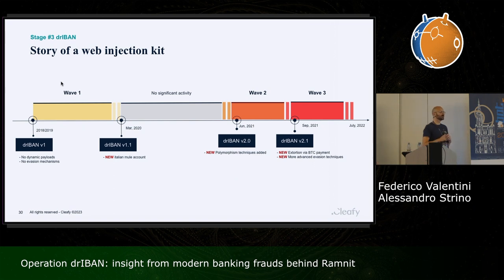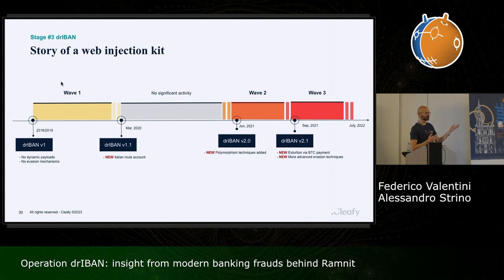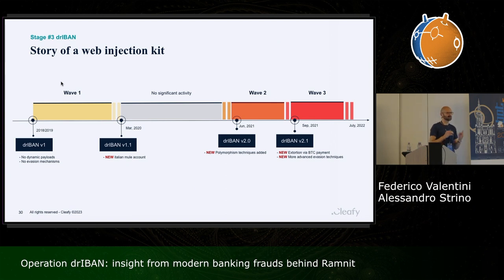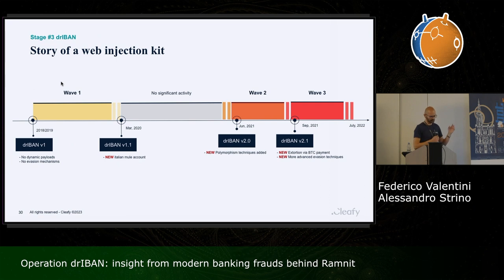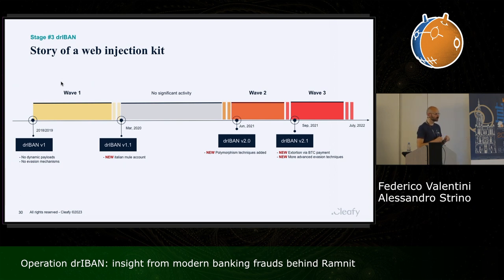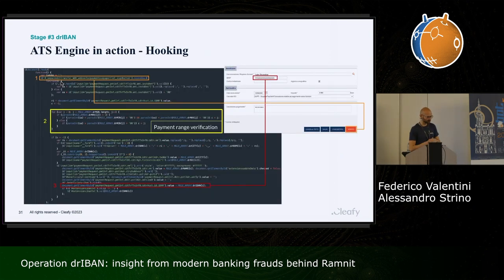We also saw a quite strange paradigm: an extortion attempt in Bitcoin, where they tried to send messages to banks or people monitoring their activity. This history is divided into three different waves representing the intensity of Driban activity, with a peak reached in September 2021. The timeline goes until July 2022 — keep that date in mind, it will become relevant shortly.